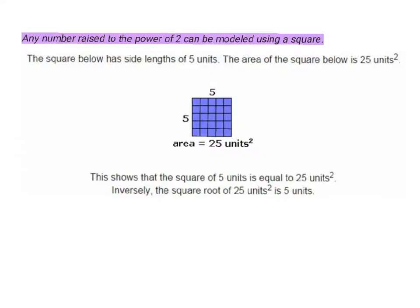Any number that is raised to a power of 2 can be modeled by using a square. So here, if we have 5 squared, we would want to draw a model that has side lengths of 5 - a square that has a width of 5 and a length of 5. If you draw a grid showing those 5 and count them up, it has 25 little squares there. So the area is 25 units squared. That means 5 squared is equal to 25.